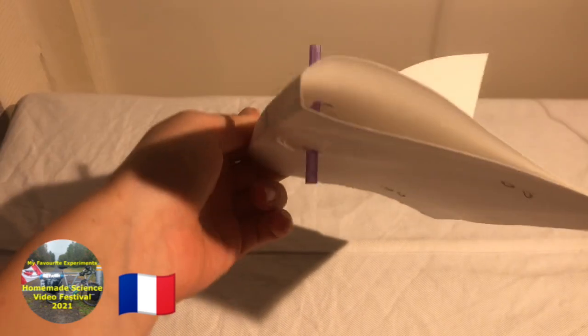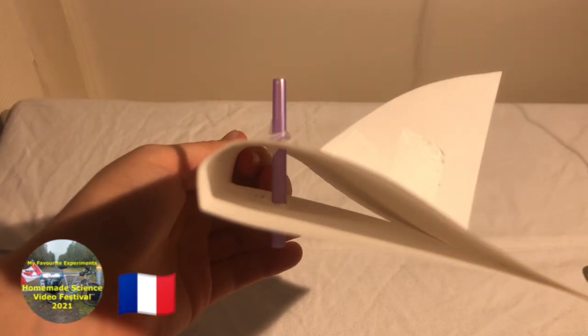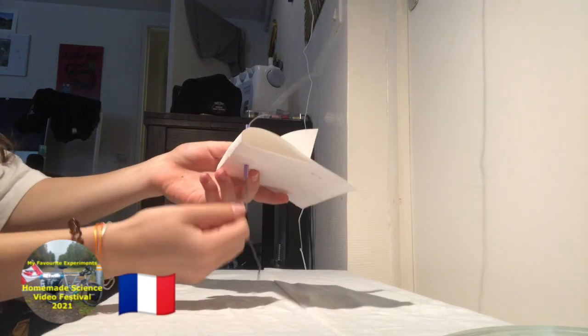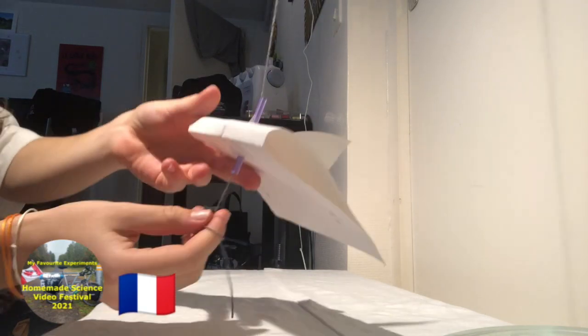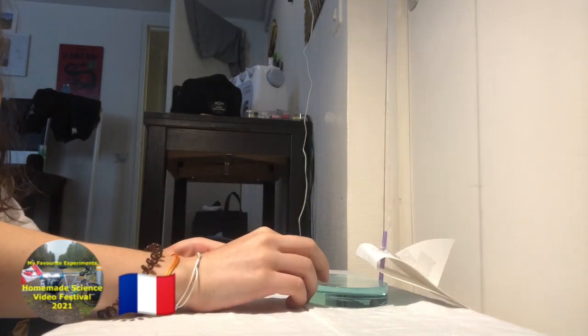When the straw is perpendicular to the ground, make sure that the wing is at an upwards angle. Tape the straw so that it stays in place. Now tie the string to something that's up high and that's sturdy. Pull the string through the straw in your wing and put something heavy on the bottom of the string to make sure it's tight.